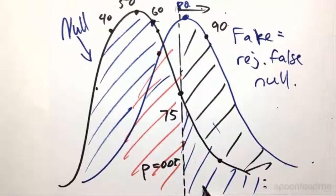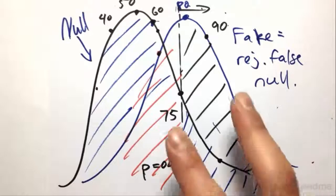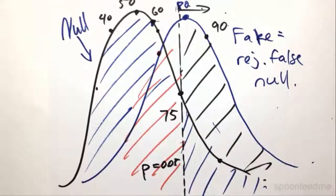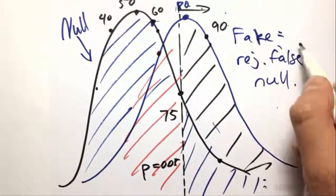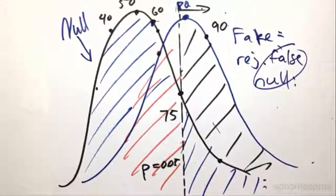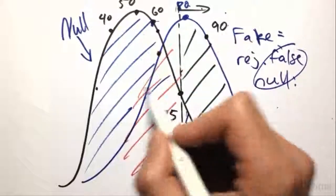We missed out on the fact that it was a fake coin, but we thought it was a true coin. So, we did a type 2 error, in which we retained the false null. Remember, false null being fake, but we retained it thinking that it was normal.